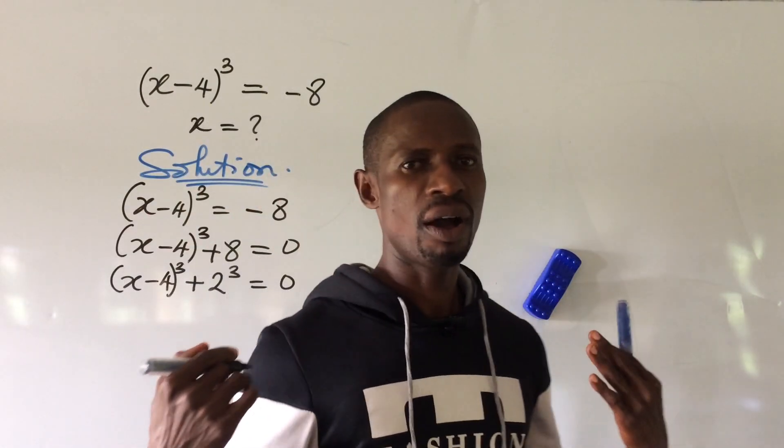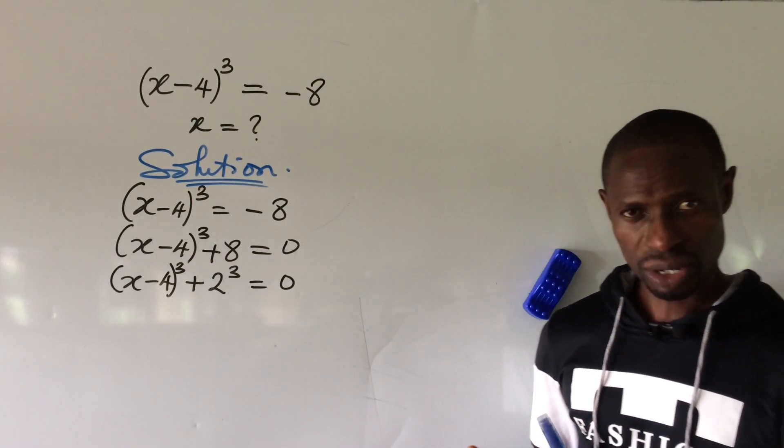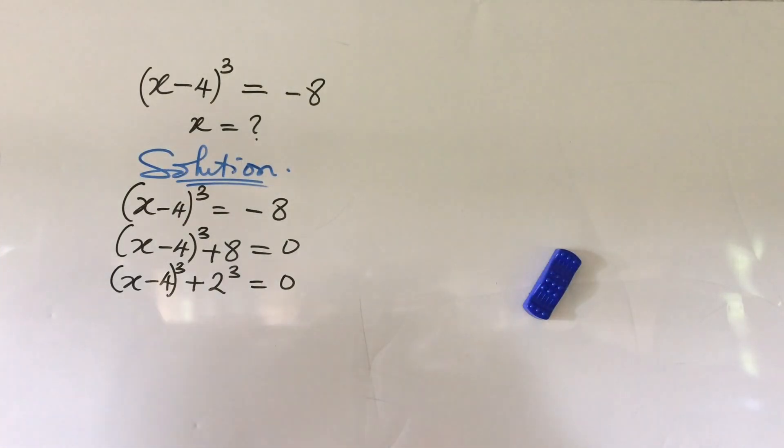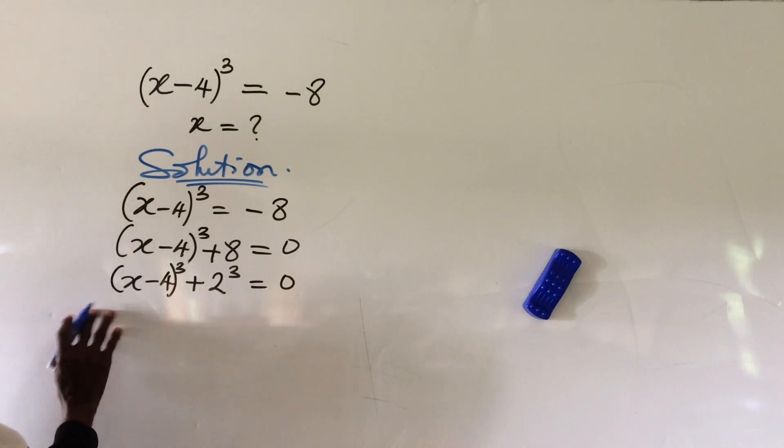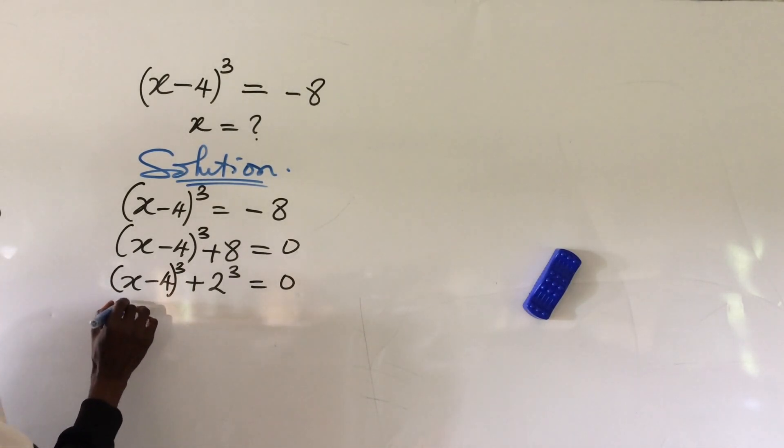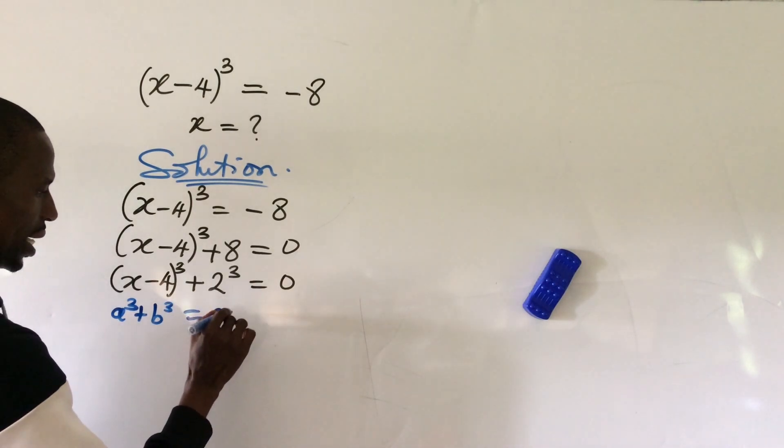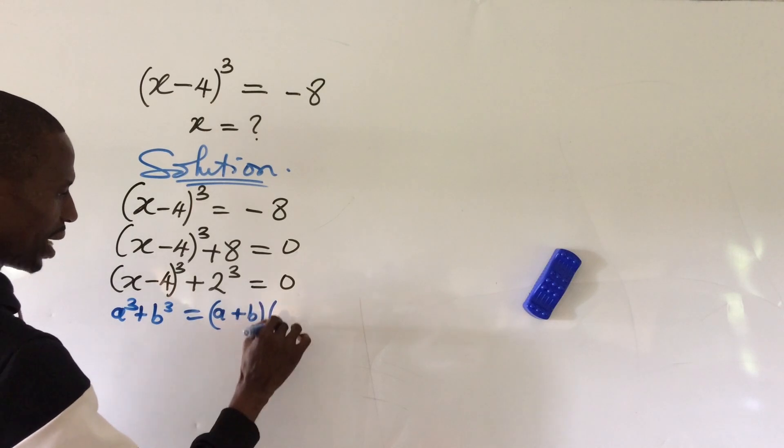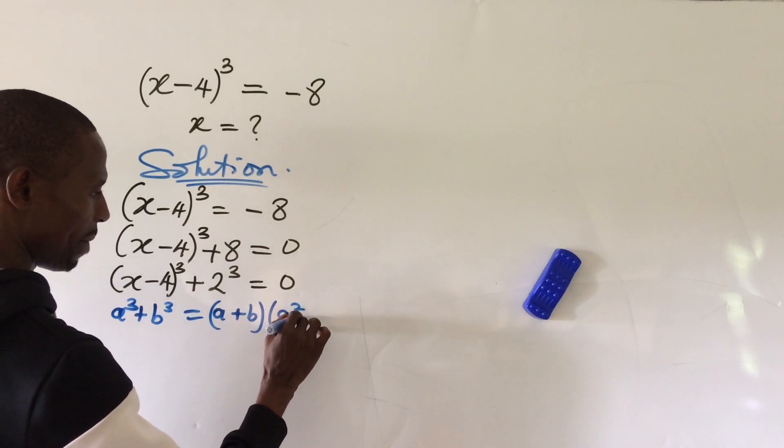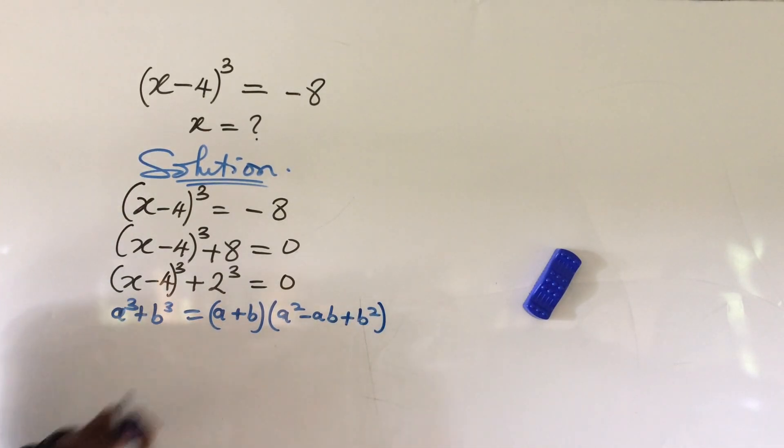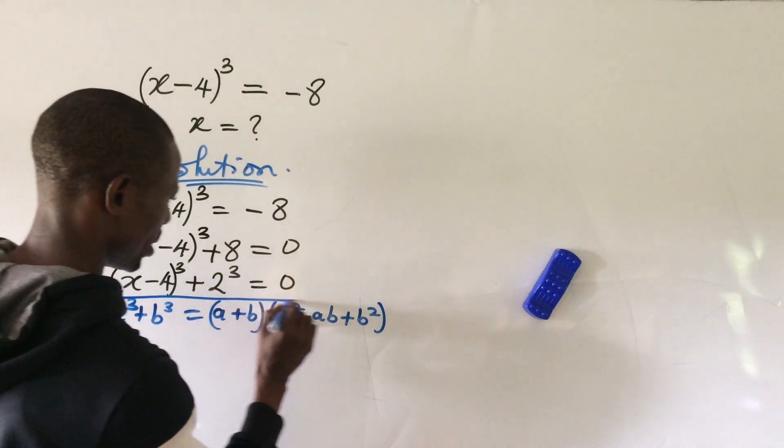Now with this expression we have on the board, what comes to mind is our algebraic identity. Okay, remember the algebraic identity which says that if you have a³ + b³, this is equal to (a+b)(a² - ab + b²). Okay, remember this identity?